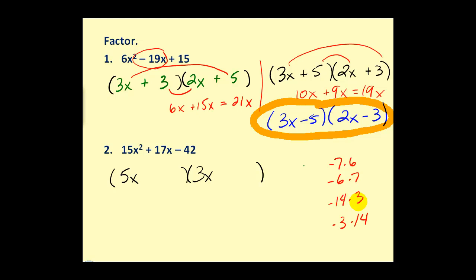We just try two of them. That's why it's called trial and error. However the more you do this the better you get at it. If we tried the -7 here then this would have to be +6. Let's check it. Here we have 18x and the other product would be -35x which equals -17x.